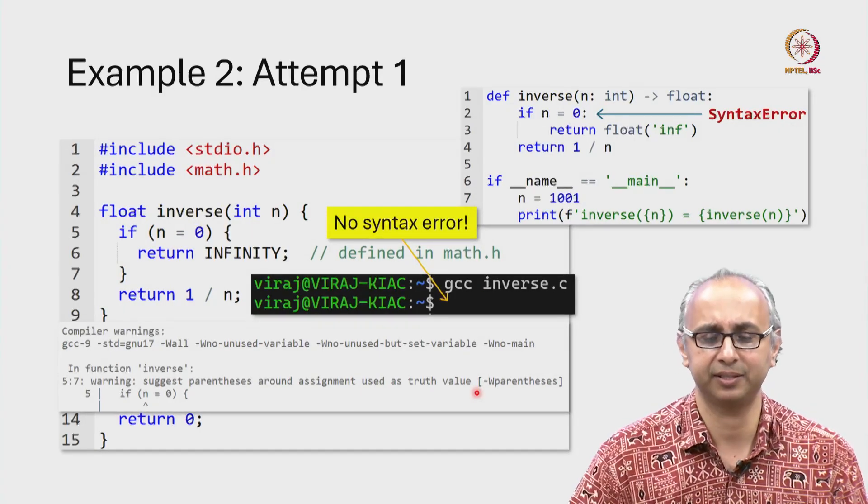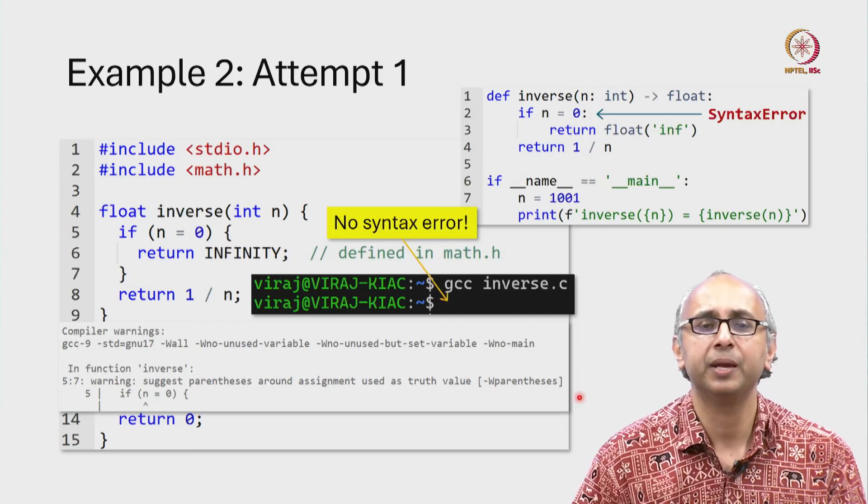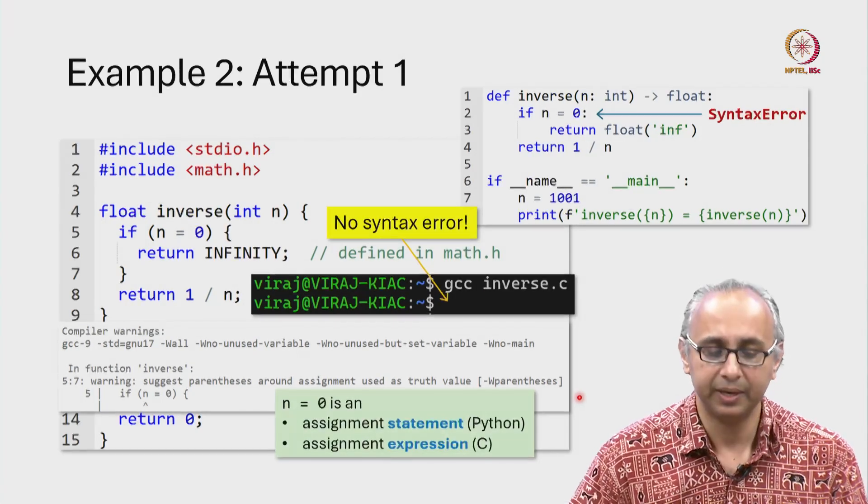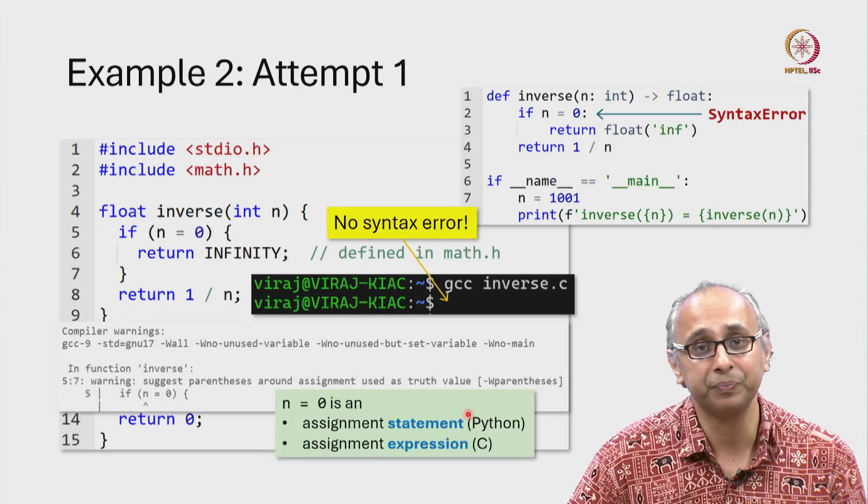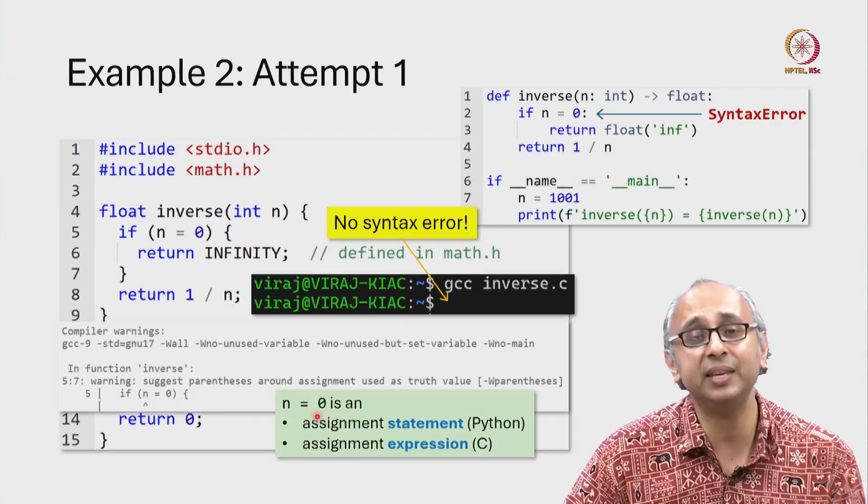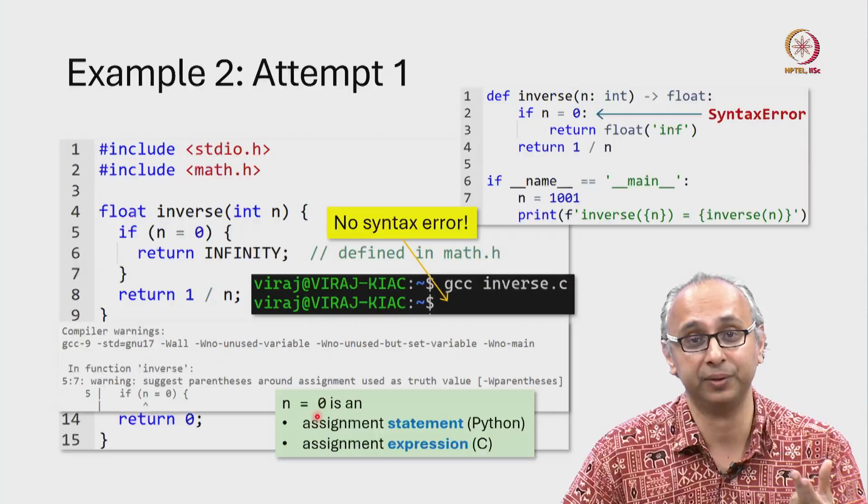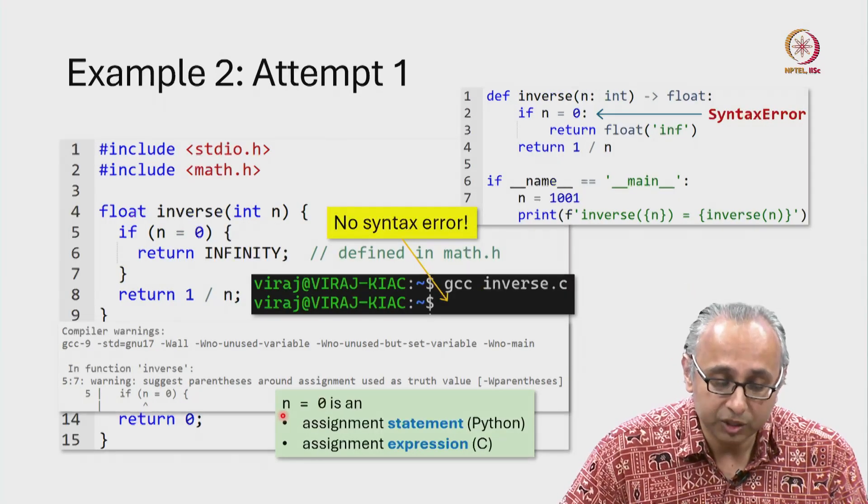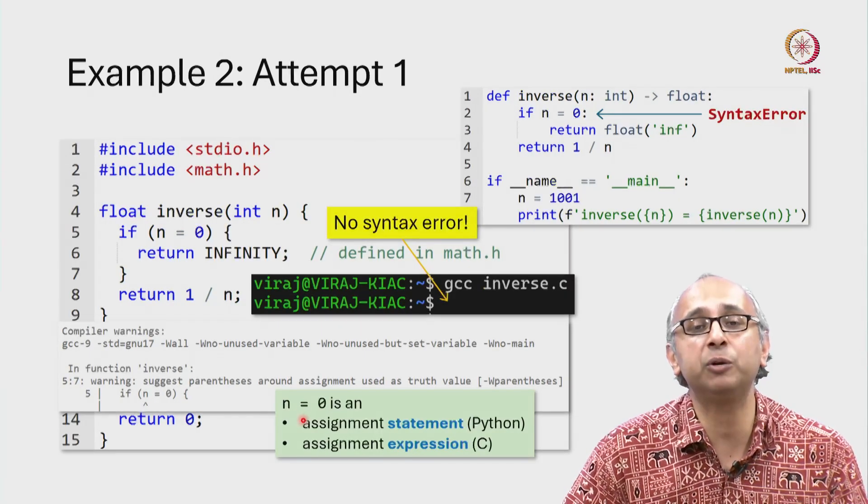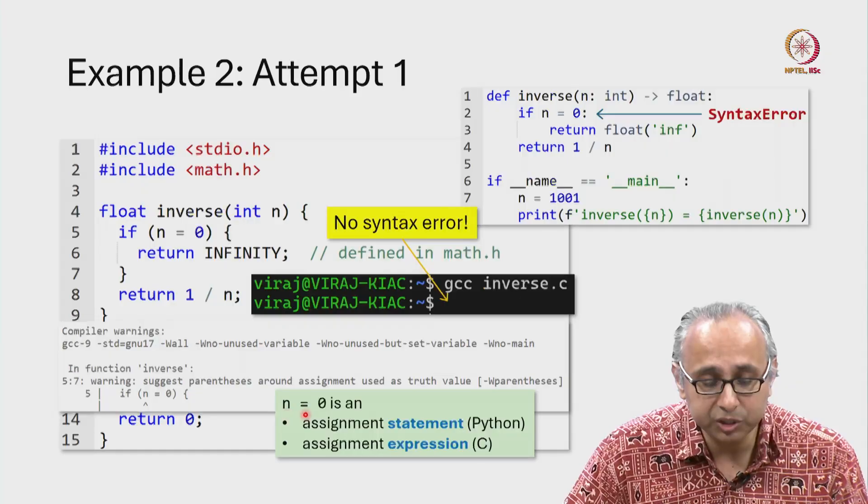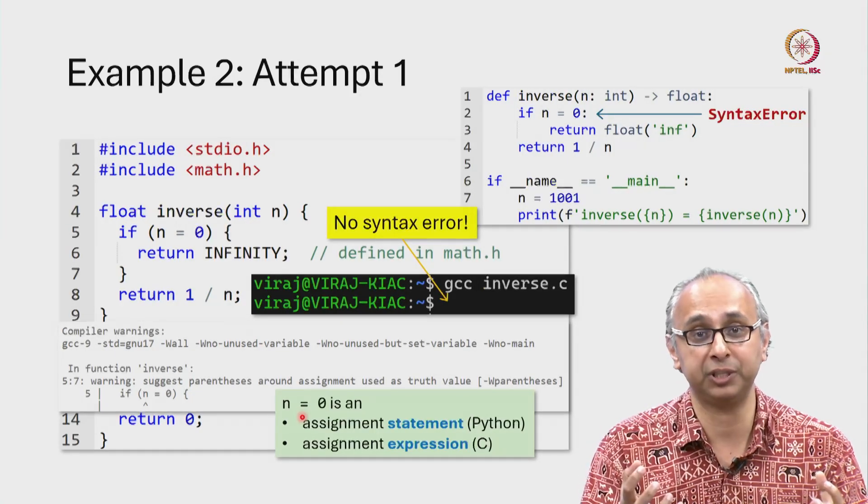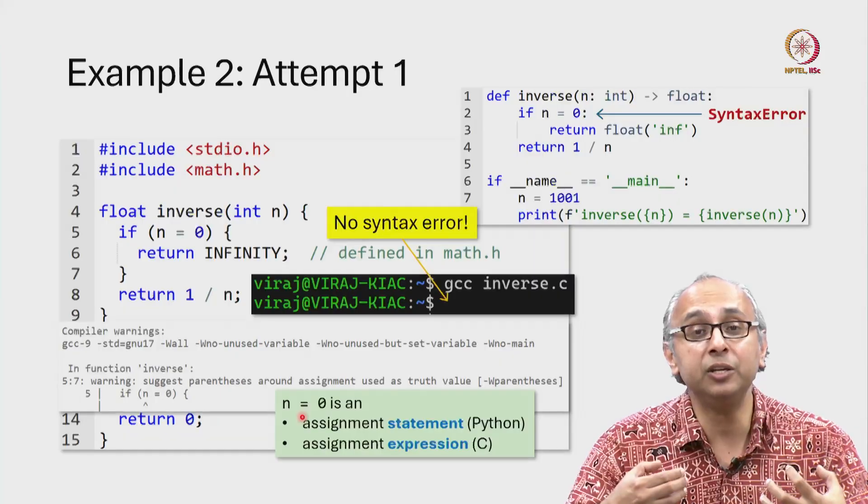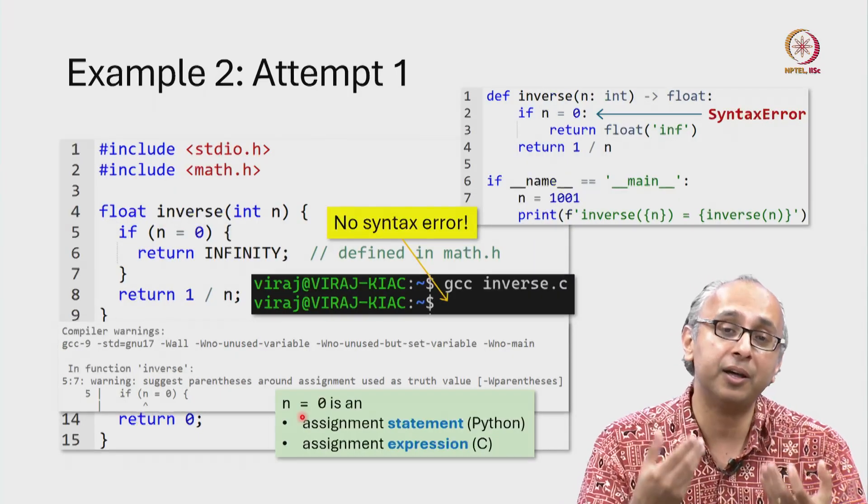Well, to understand this, we have to remember that in Python, a statement like this is an assignment statement. Whereas in C, this is an expression which means that not only will this set n equal to 0, but this whole piece of code has a value associated with it which you can then use in some other context.